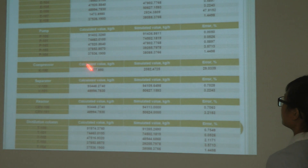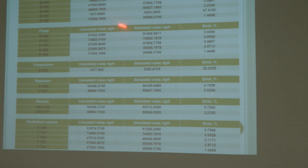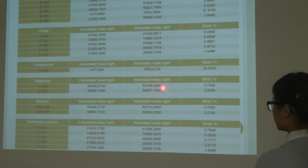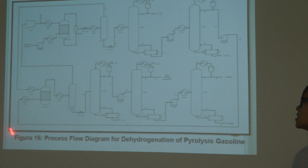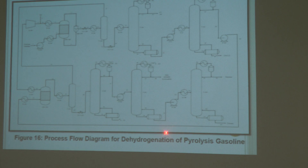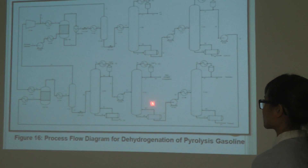This is the comparison for mass balance between manual calculations and Aspen HYSYS. The difference between the calculated values and the simulator values is quite low, except for E107. This is because in the manual calculation we assumed only hydrogen gas is recycled back to the reactor, but in HYSYS, some benzene and toluene are also recycled back — this is why the value differs.